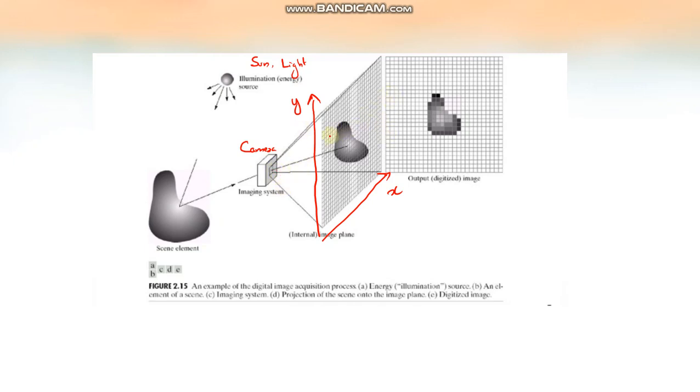This is how this image appears through this imaging system during image acquisition. So once this digital camera acquires this object, it is converted to a digital image. Now this process includes two steps.